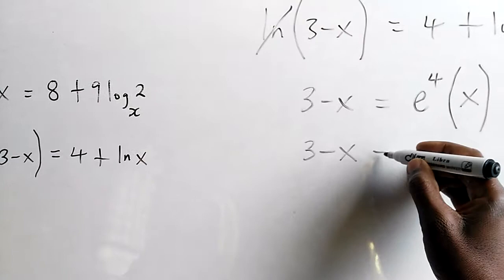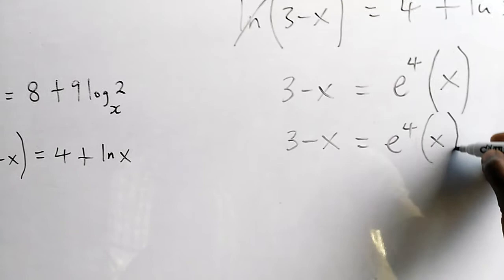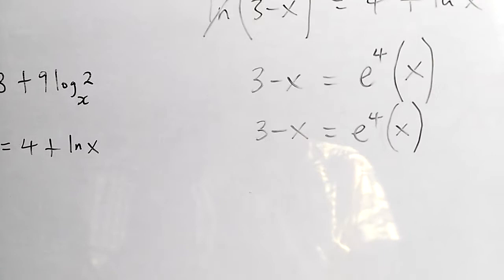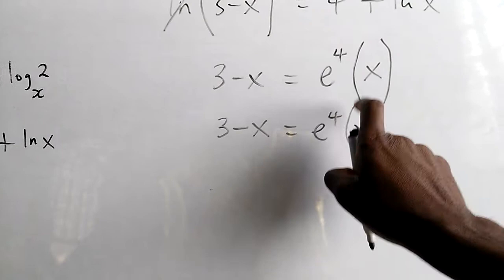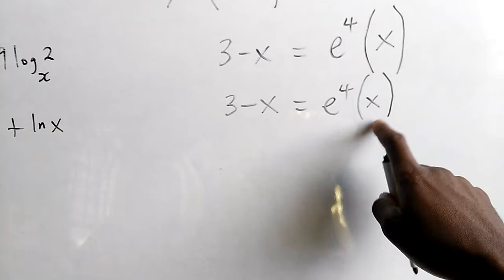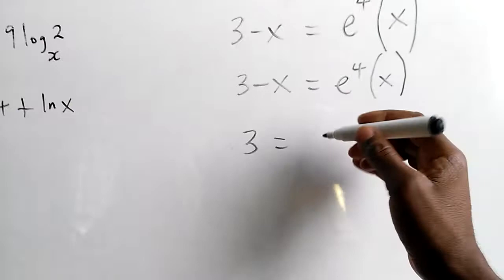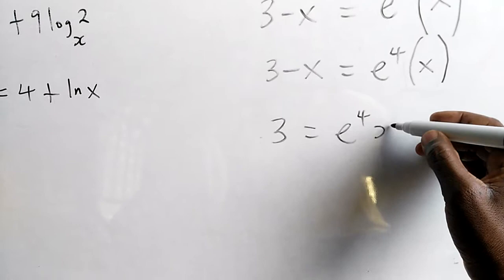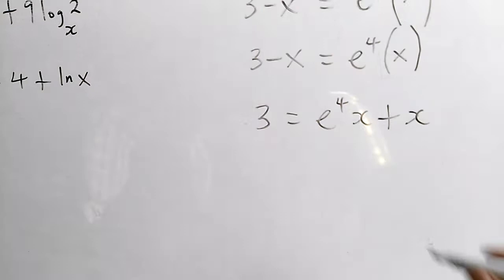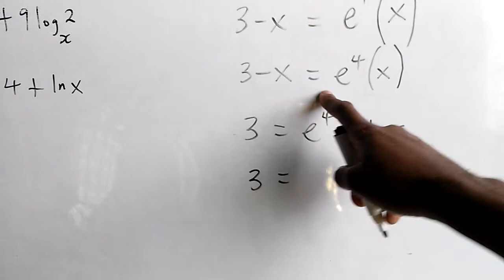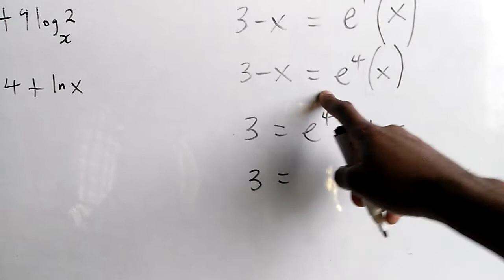So e to the 4 — press on your calculator, e and then put in the value 4. It will be a number, a coefficient of x. Therefore when we collect like terms, it will be such that e to the 4 of x, that's when you add the x. So e to the power of 4 times x plus x — we'll have something, a number, over the x. And then we divide both sides by the very number. You get the value of x.